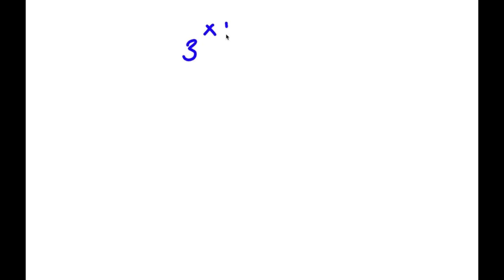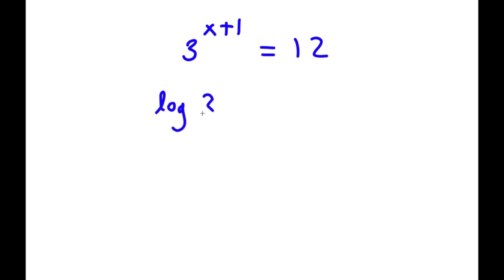In this problem, I have 3 to the power of x plus 1 is equal to 12. To solve this problem, I'm going to first start by taking the log on both sides. So now I have log 3 to the power of x plus 1 is equal to log 12.